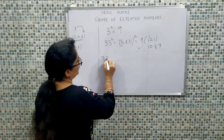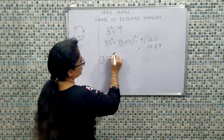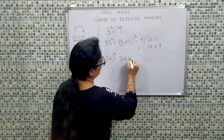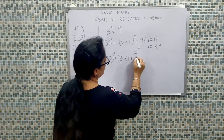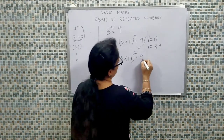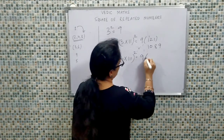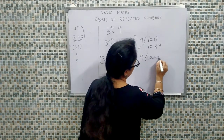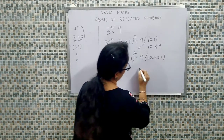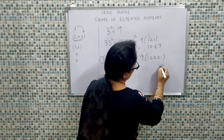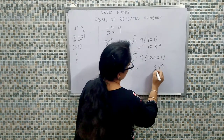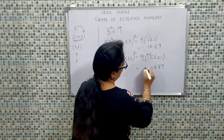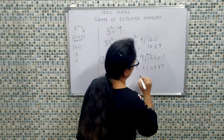Agar triple three ka square nikaalna hai, hum likhenge three into triple-one ka whole square. Three into three is nine, aur triple one gives us one, two, three, two, one. So nine ones are nine, nine twos are eighteen, nine threes are twenty-seven, eighteen, nine — and this gives us 123,210 after carrying, simplifying to the final answer.